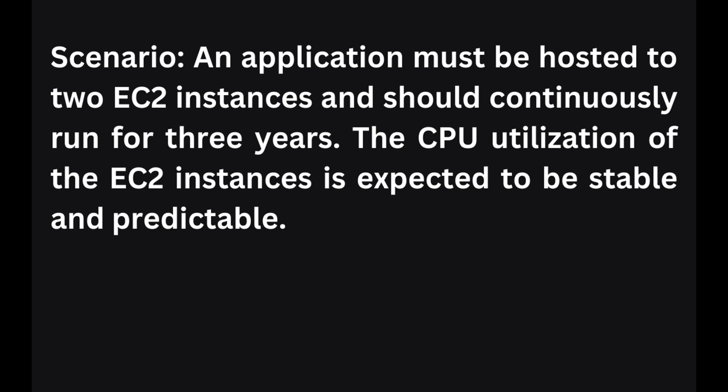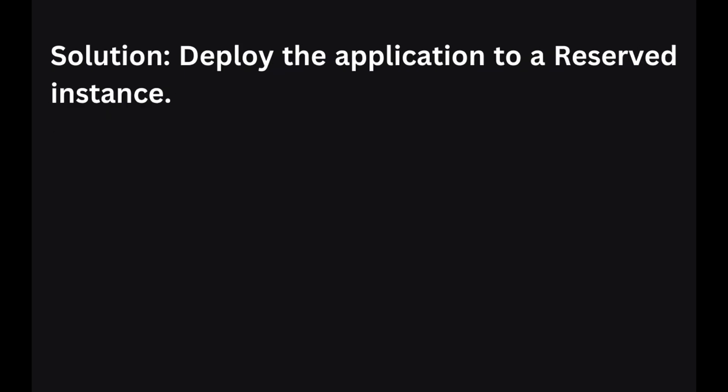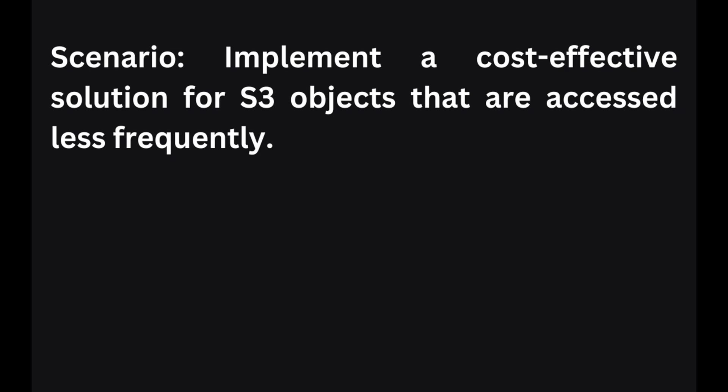In the next scenario, an application must be hosted on two EC2 instances and should continuously run for three years with stable and predictable CPU utilization. To host this application cost-effectively, you can deploy using Reserved Instances. Reserved instances provide a cost-effective option for long-term and predictable workloads.